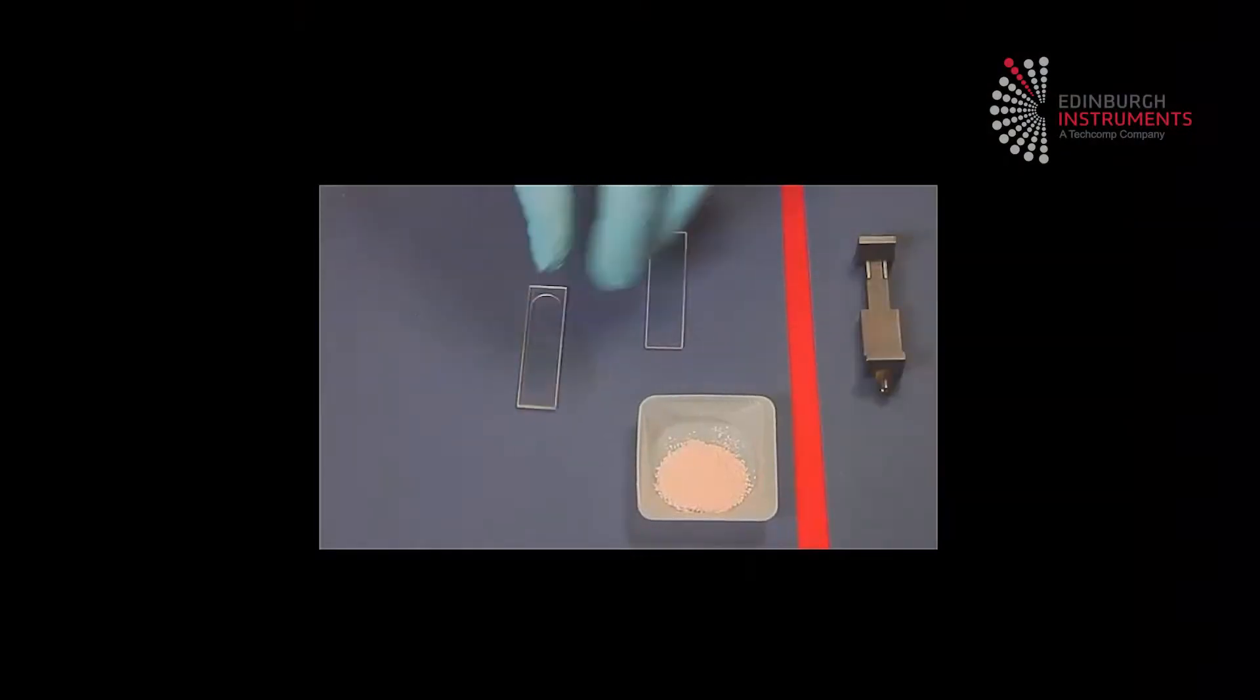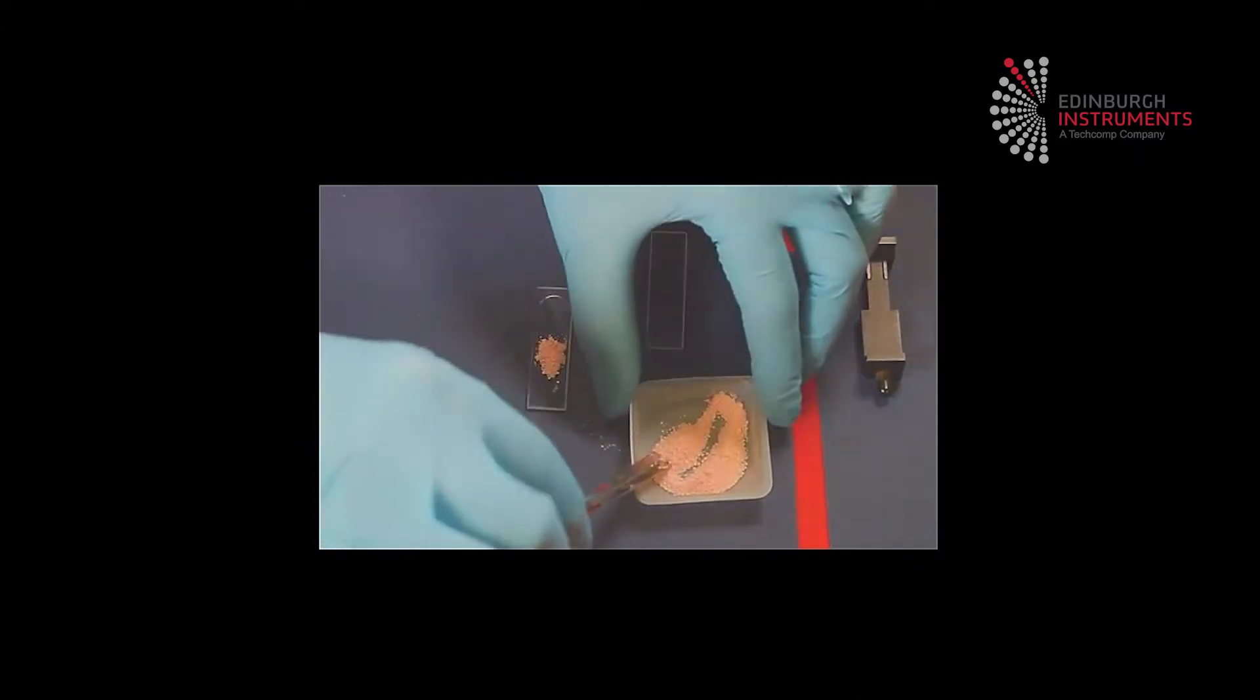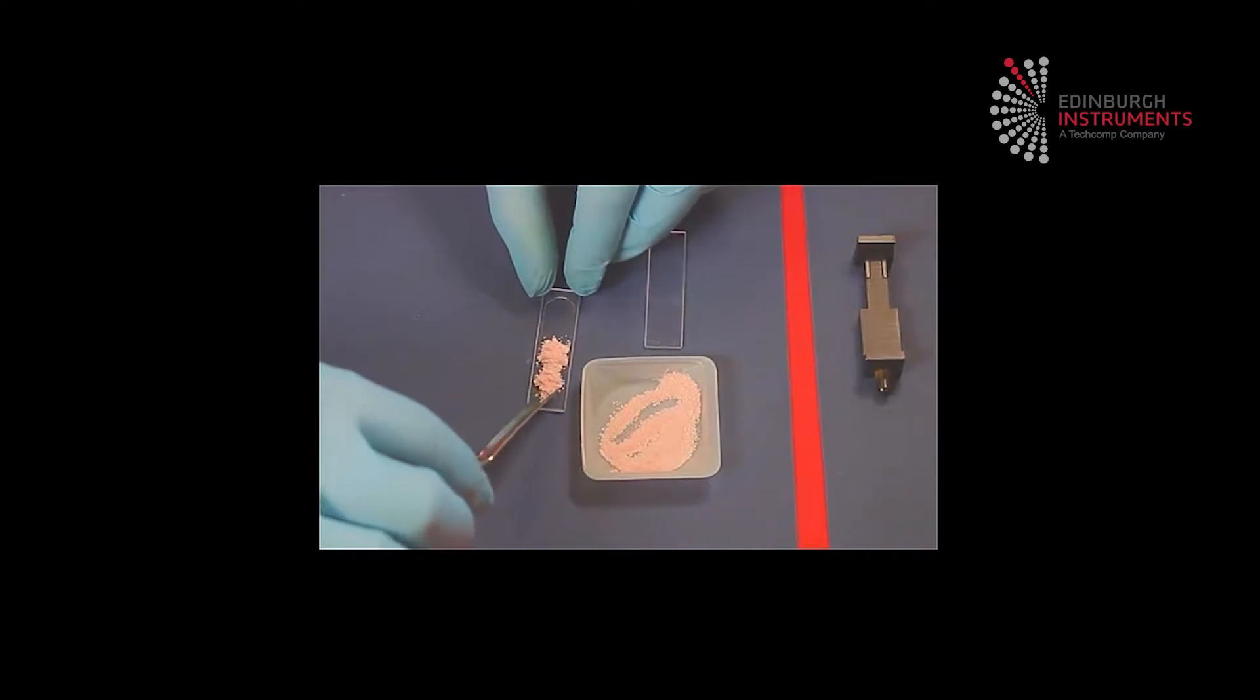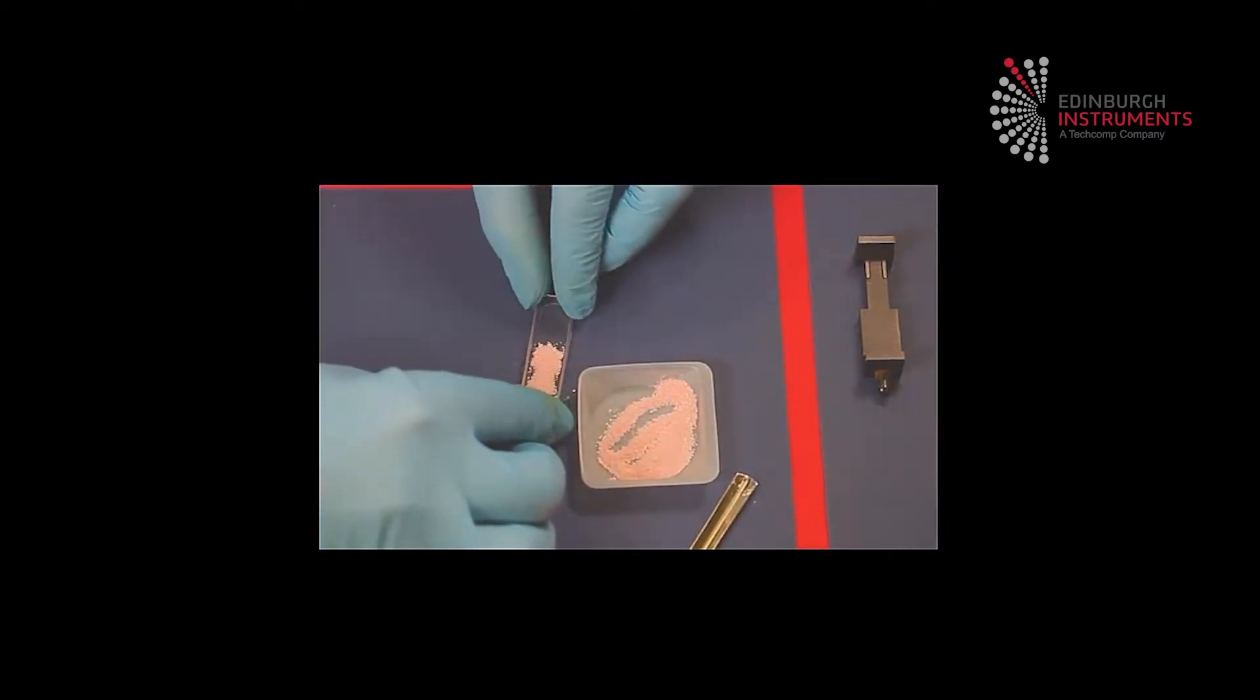Powder samples can be mounted in the demountable cuvette. Solid samples come in many sizes and shapes, so some creativity is often needed. Film samples can be mounted on the small jaw clip.